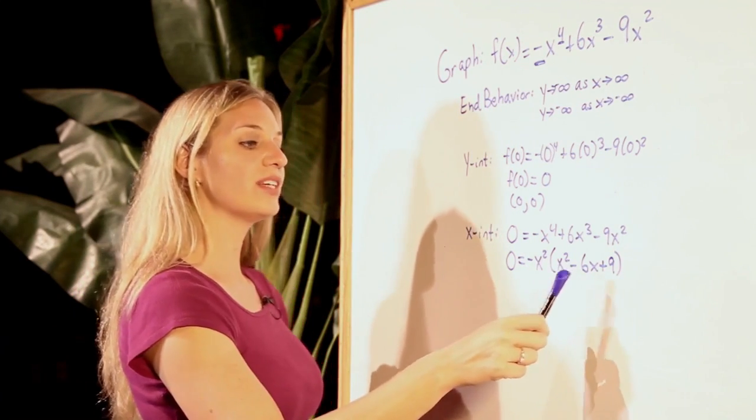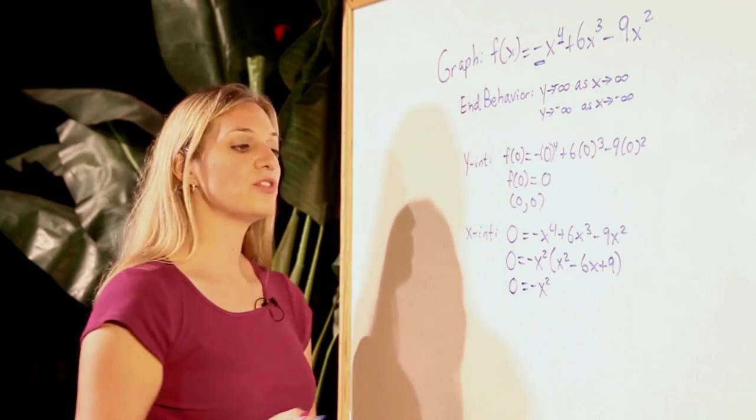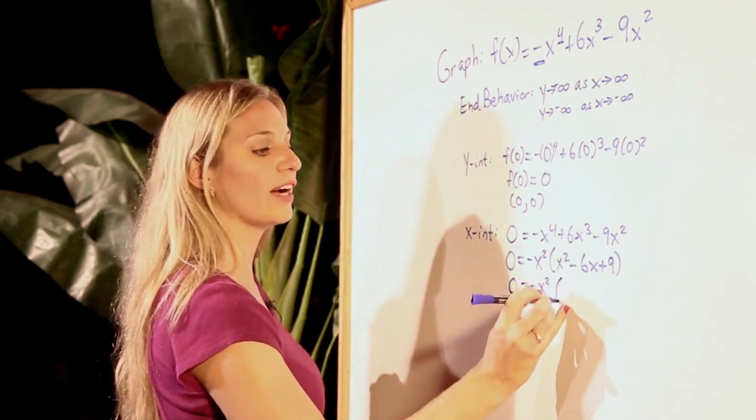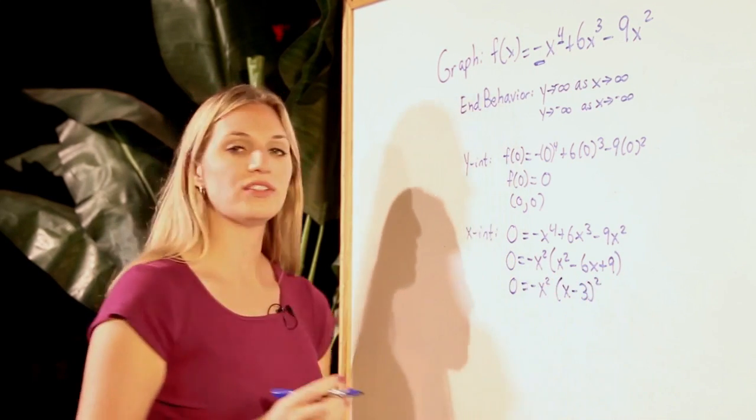Now, x-squared minus 6x plus 9 is a perfect square trinomial. This particular perfect square trinomial will factor into (x minus 3) quantity squared.